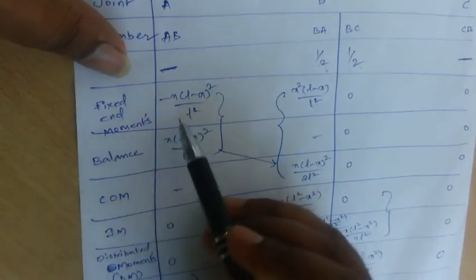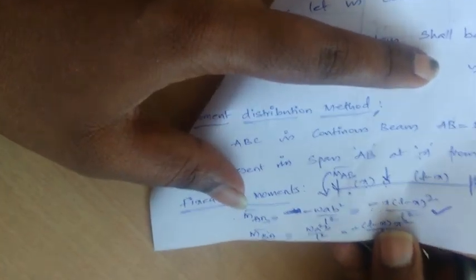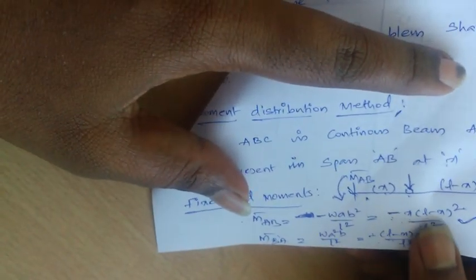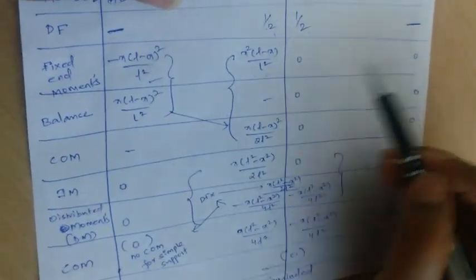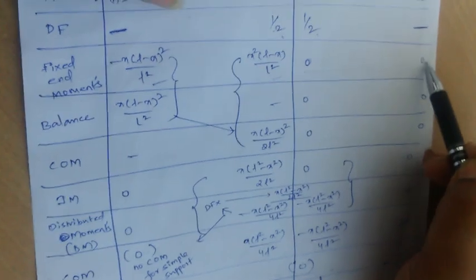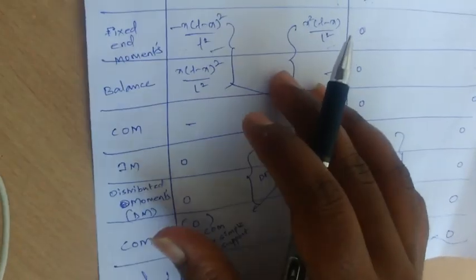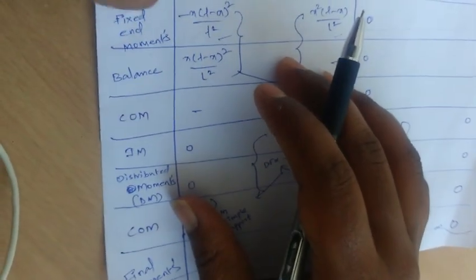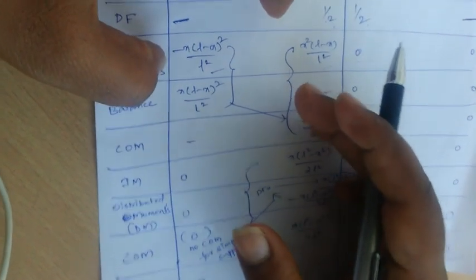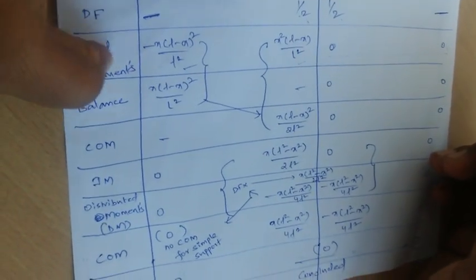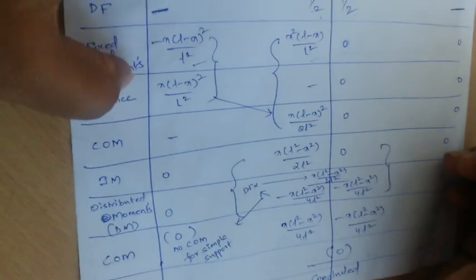The fixed-end moments are entered as minus X(L−X)²/L² at AB and plus (L−X)·X²/L² at BA, with zeros for BC and CB. Since the extreme ends are simple supports, the very next step after writing fixed-end moments is balancing — because there must be no moment at a simple support.